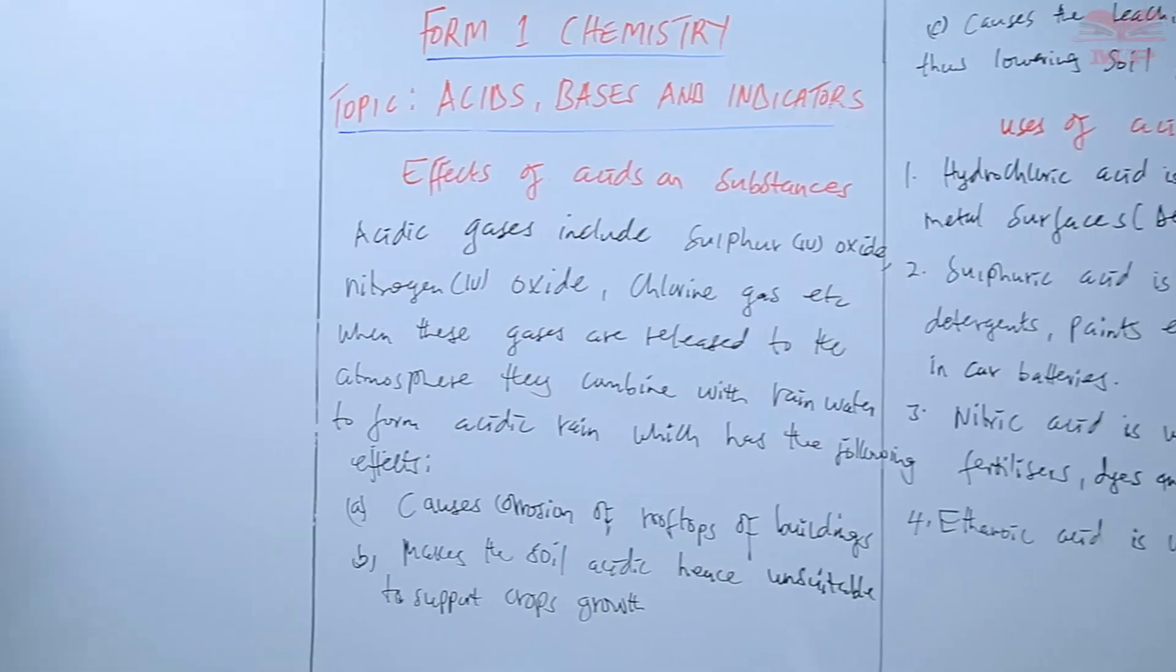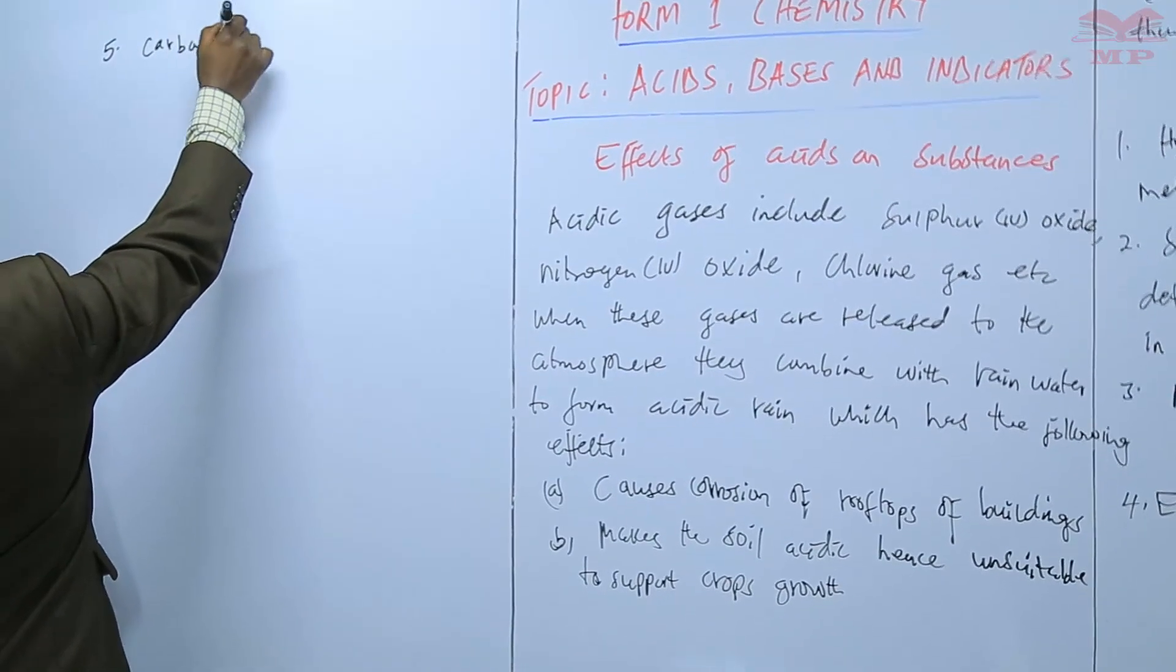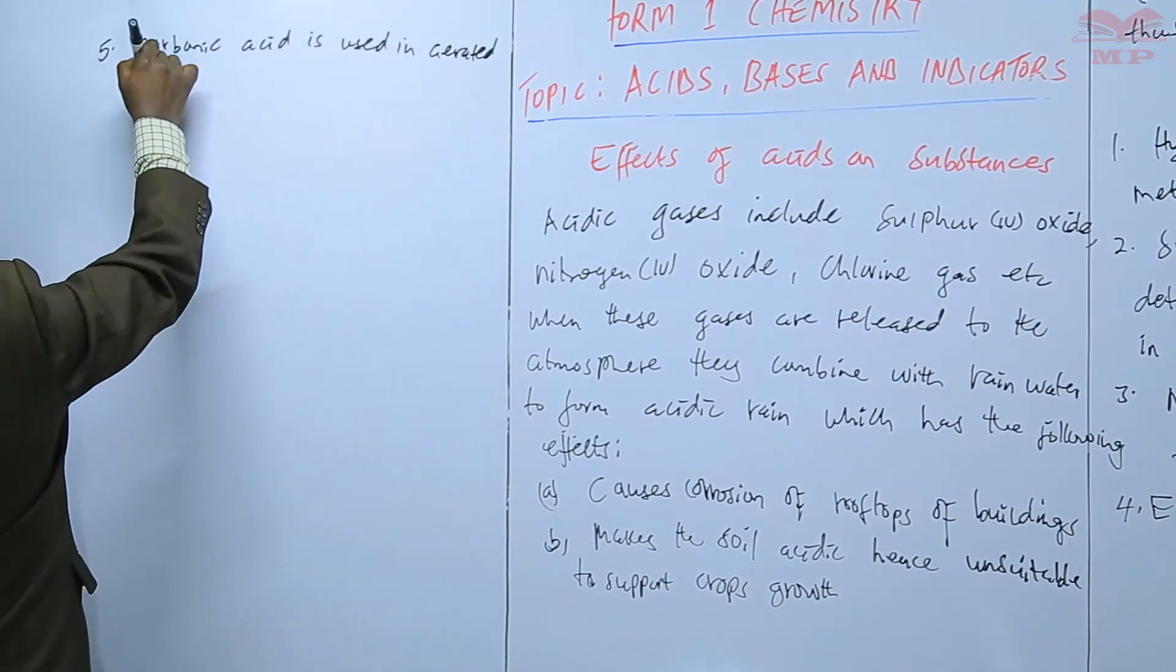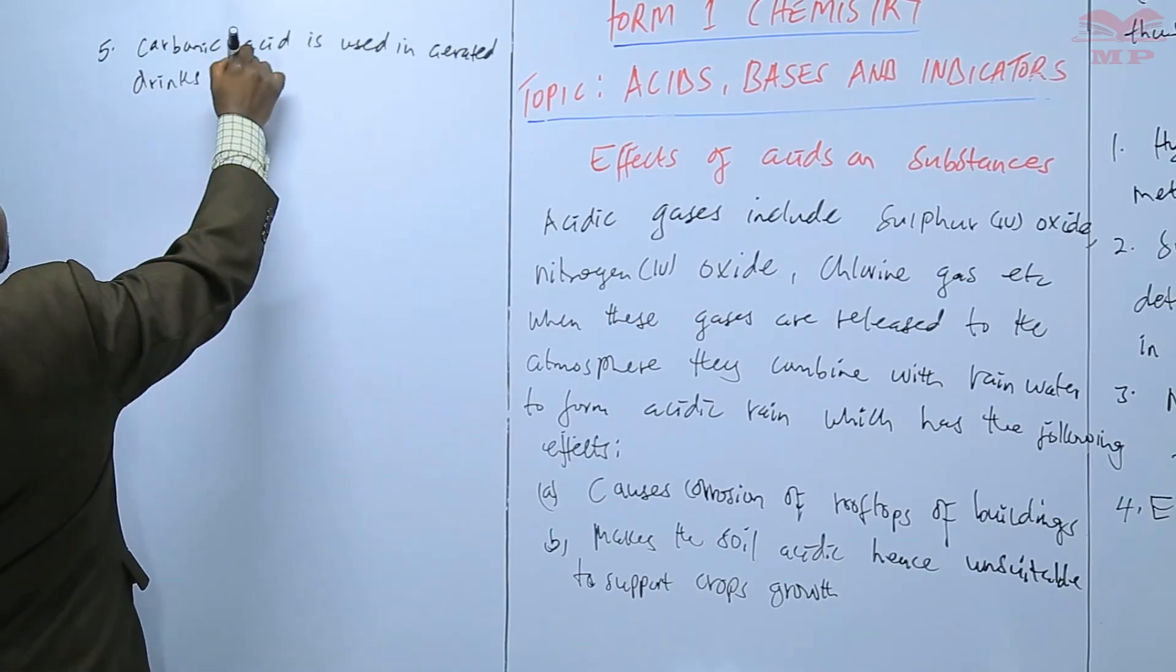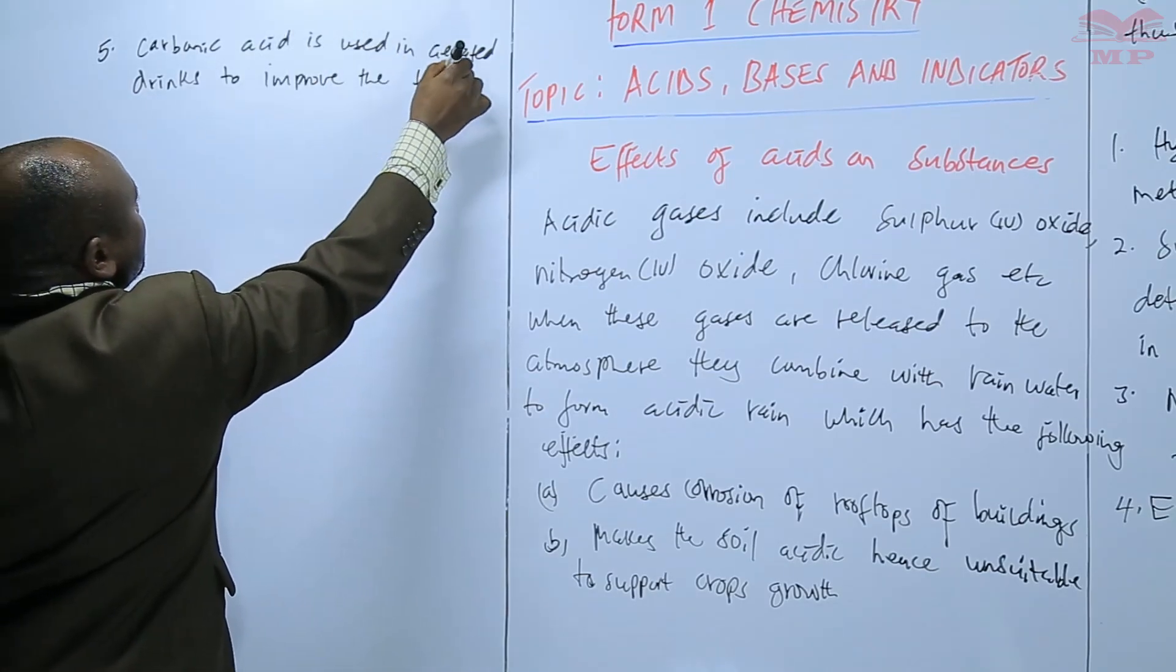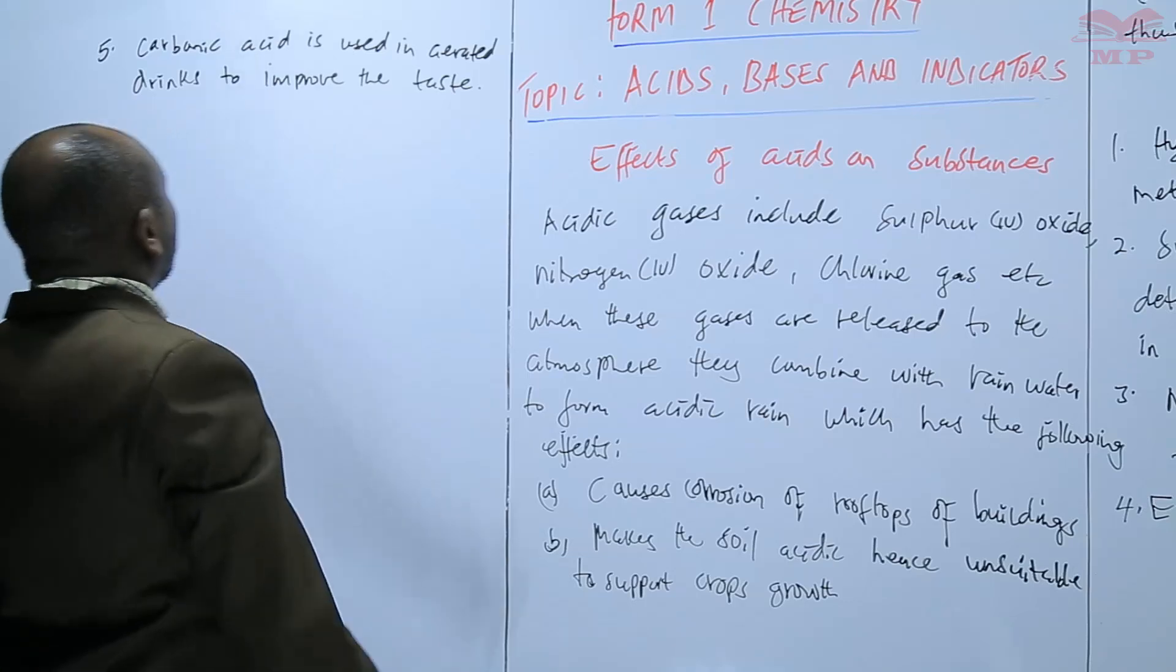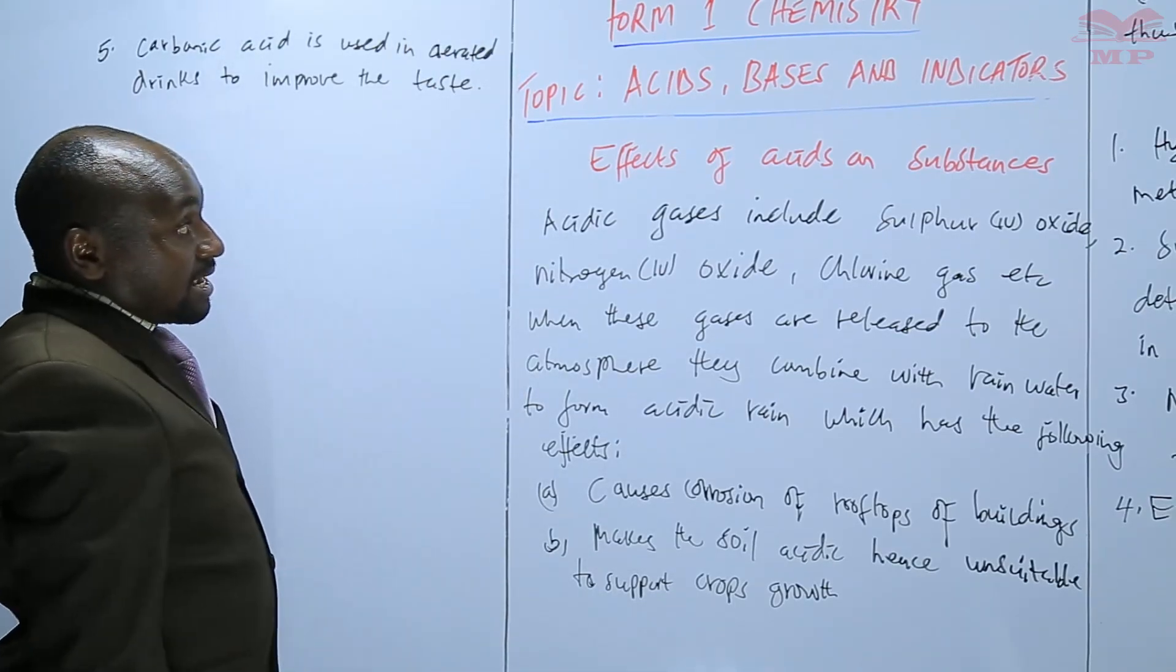Number five, we have very many acids that have very many uses. We have carbonic acid is used in aerated drinks, e.g. sodas, to improve the taste. So the aerated drinks, such as sodas, they have carbonic acid, and that is done to improve the taste. So that is as far as the acids are concerned.